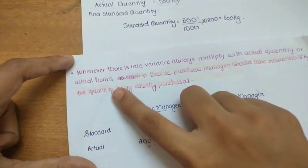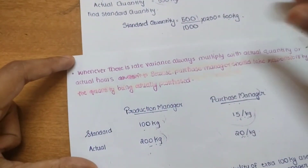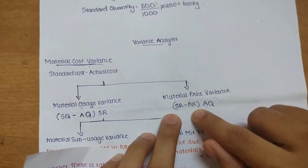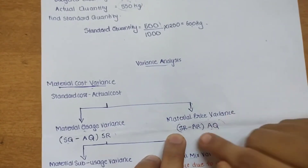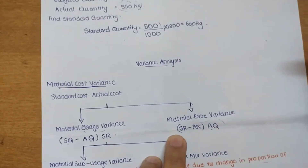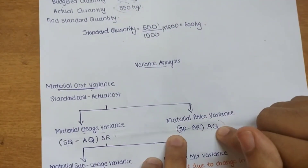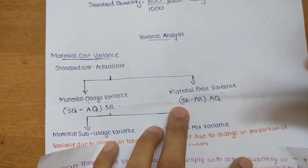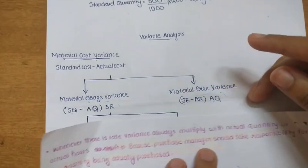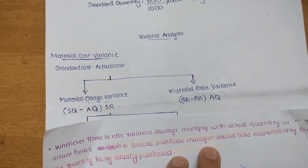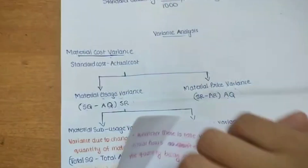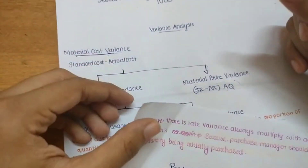When it comes to material price variance, whenever there is a rate variance, always multiply by actual quantity or actual hours. The formula is: (Standard Rate − Actual Rate) × Actual Quantity. The purchase manager should take responsibility for the quantity actually purchased.